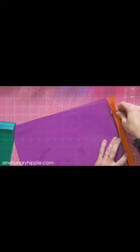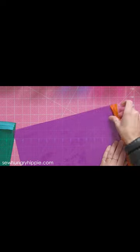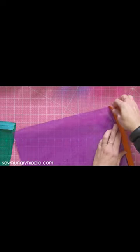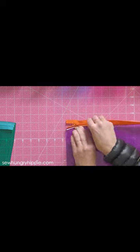Once you have that sewn on, finger press the seam. You can see that the vinyl is right there underneath. And I'm going to topstitch that down so it sits really nice and flat.